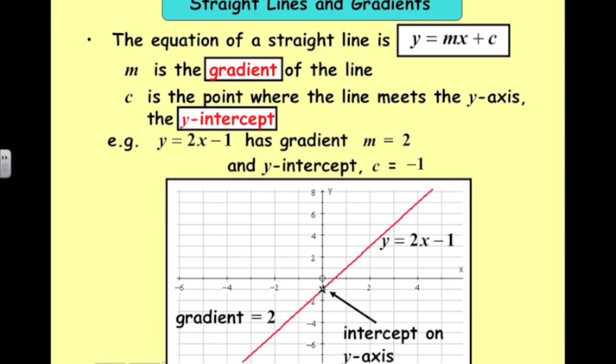So if we start there at minus 1, we'd go up 2 and across 1 to get the next point. From that point, up 2 and across 1.